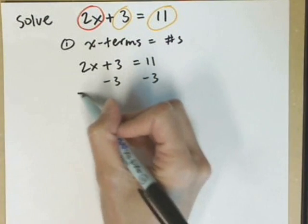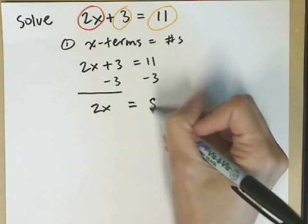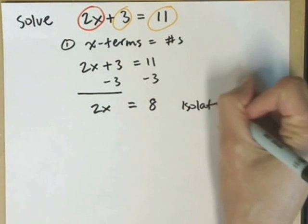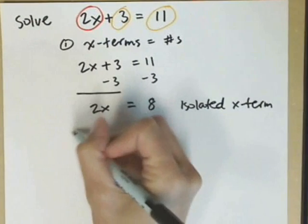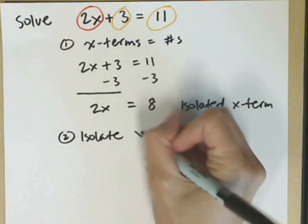That leaves me with 2x only on the left. On the right, I have 11 minus 3, which is 8. So now I have isolated the x term, which means that I'm ready for step number 2, and that's to isolate x.